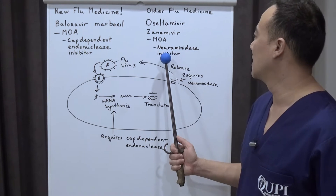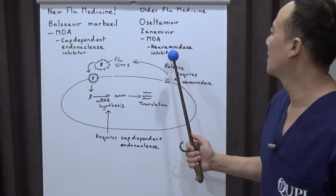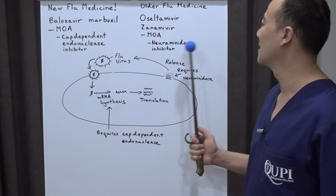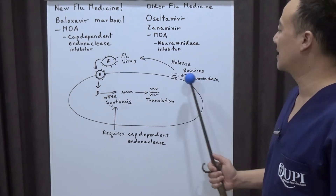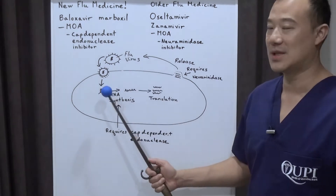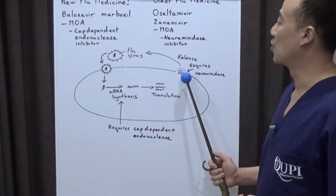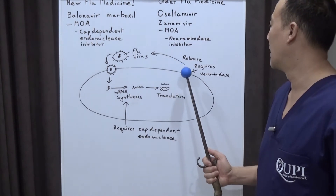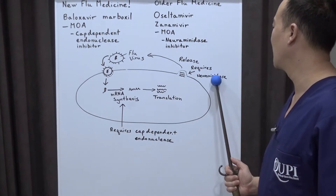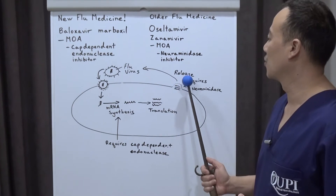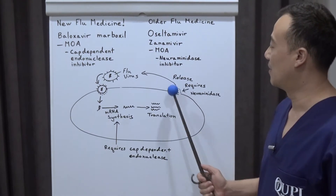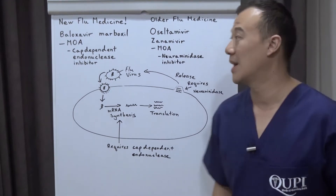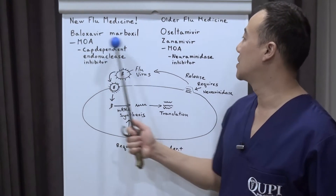What the older drugs do is act as a neuraminidase inhibitor. The neuraminidase step happens at a later stage, after the virus has replicated and needs to be released back into the body fluids. It requires neuraminidase to break the cell membrane so that it can be released into your body system. That's the difference between these two drugs.